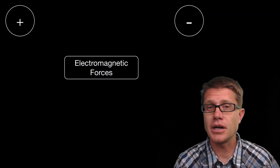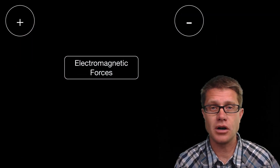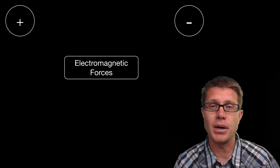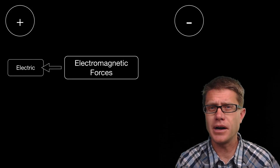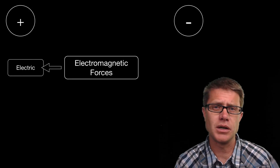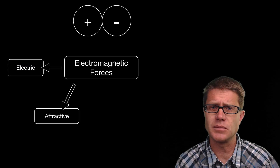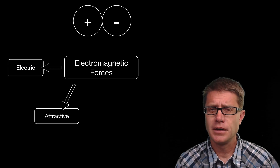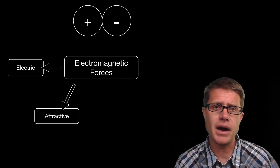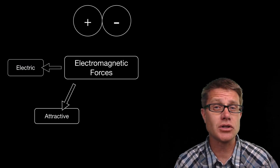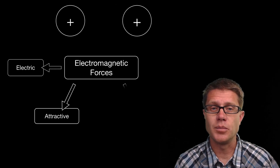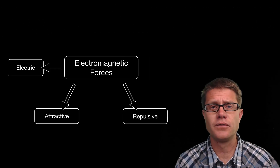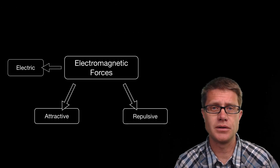To look at electromagnetic forces we could look at charges. If I have a positive and a negative electric charge, what we find is that there is going to be an attractive force pulling them together. Now how is electromagnetism different than gravity? If those charges are the same — let us make them both positive — now there is going to be a repulsive force between the two.